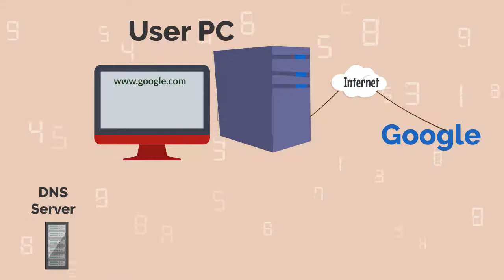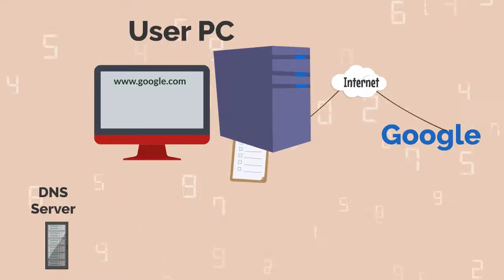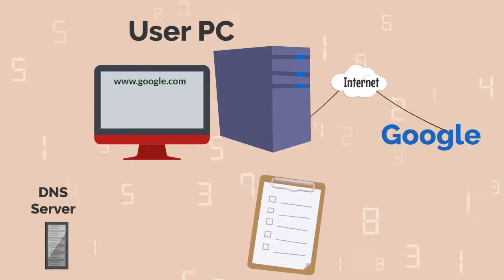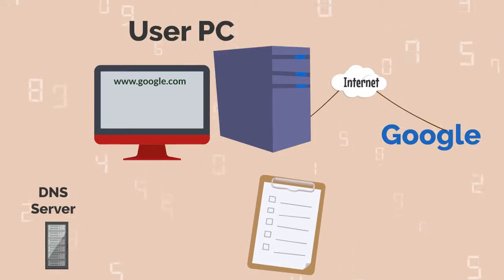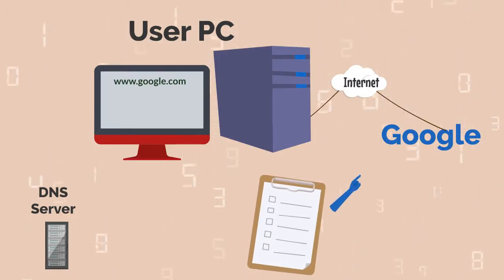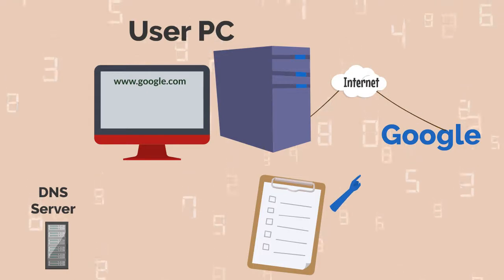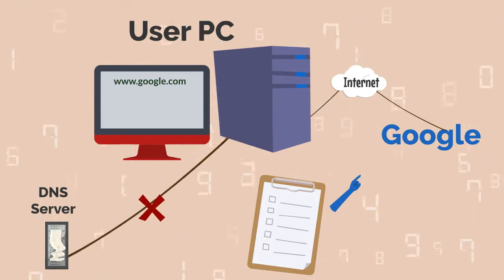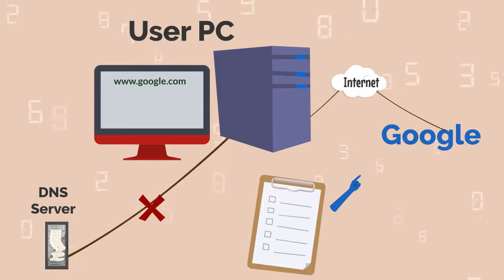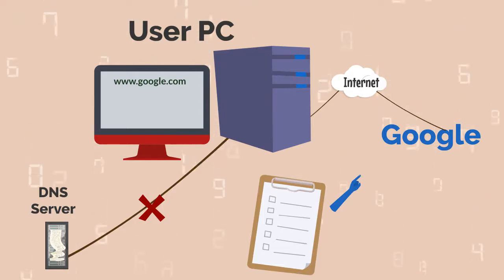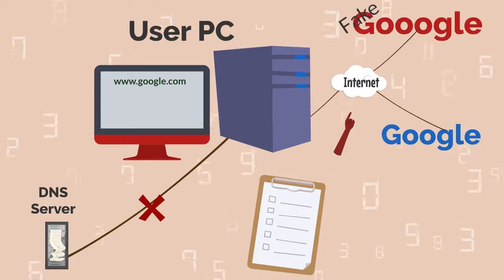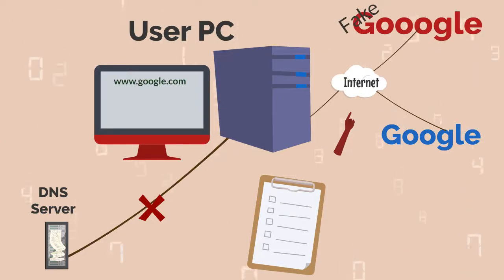The second method of pharming is by changing the host file on the user's computer. The host file resides on the user's computer and also gives the address of the web server by resolving the domain name into an IP address. It overrides the domain name system. If a bad person succeeds in installing a fake IP host file on the user's computer, they can redirect the user to a fraudulent website and collect their important information.